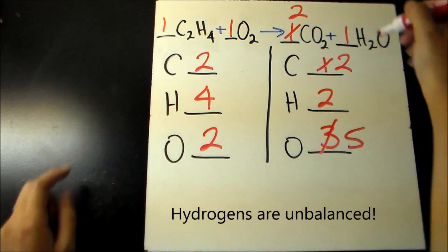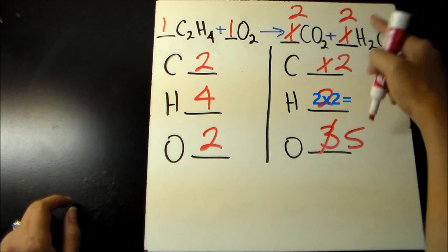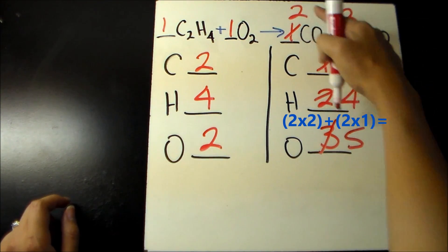The number of hydrogens is also unbalanced. To balance, add a coefficient of 2 in front of H2O, giving 4 hydrogens and a total of 6 oxygens.